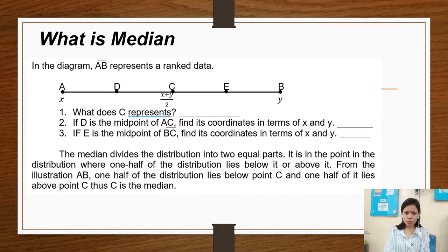So first, what is median? In the diagram, line AB represents a ranked data. So here, A, D, C, E, and B. So line AB represents a ranked data.